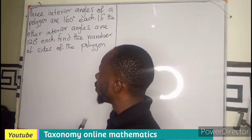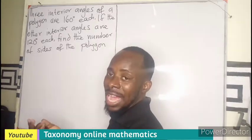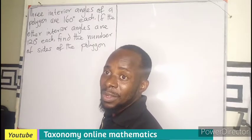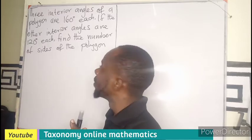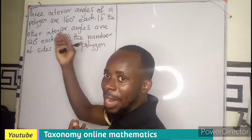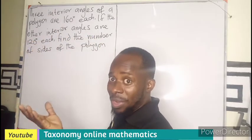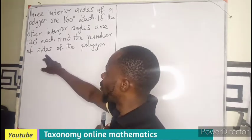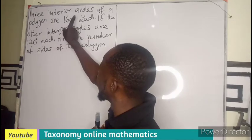Looking at this, I need to know the number of interior angles before I can be able to tell if it is a pentagon or it is a hexagon. I don't know. If I were to know the number of interior angles, then automatically, our number of sides is known.